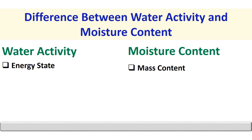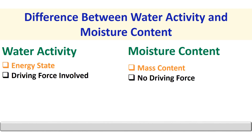First, water activity indicates the energy state of water in a food — that is, a higher energy state of water molecules makes them mobile and reactive — whereas moisture content indicates the amount of total water content in a food.